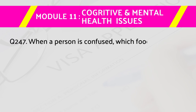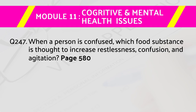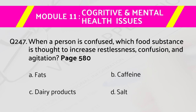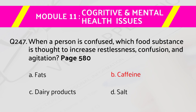Question number 247: When a person is confused, which food substance is thought to increase restlessness, confusion, and agitation — page number 580. Answers are: a) fats, b) caffeine, c) dairy products, d) salt. The right answer is b) caffeine.